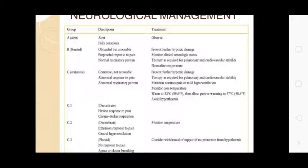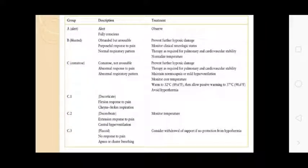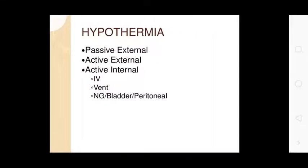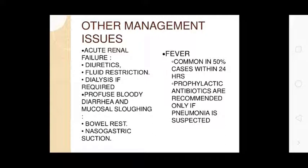Neurological treatment table: Alert — observe. Blunted but irritable — purposeful response to pain, normal respiratory pattern. Comatose — consider withdrawal of support. Monitor temperature, prevent further hypoxic damage. Decorticate/decerebrate posturing — monitor temperature. Protection from hypothermia: passive rewarming, active external rewarming, active internal rewarming.